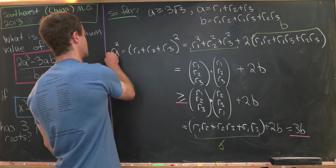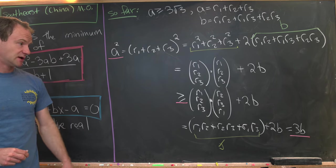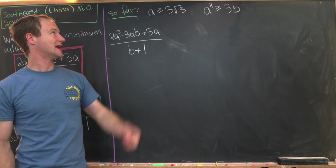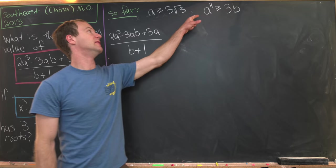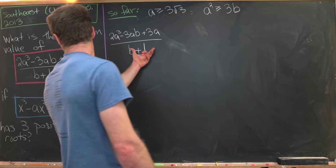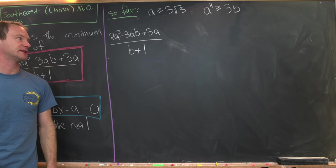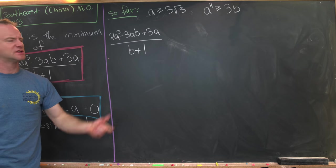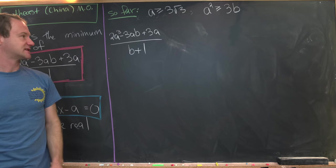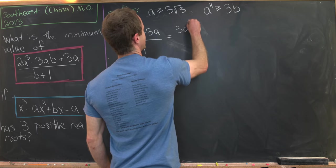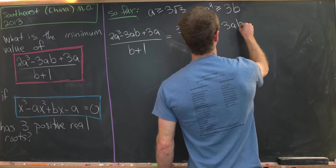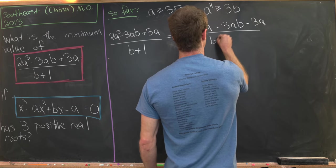So our key facts are: a ≥ 3√3 and a² ≥ 3b. Our goal is to minimize the expression 2a³ minus 3ab plus 3a, all over b plus 1. Let's manipulate this expression to use those inequalities. We rewrite the numerator as 3a³ + 6a minus 3ab minus 3a, keeping the denominator as b plus 1.